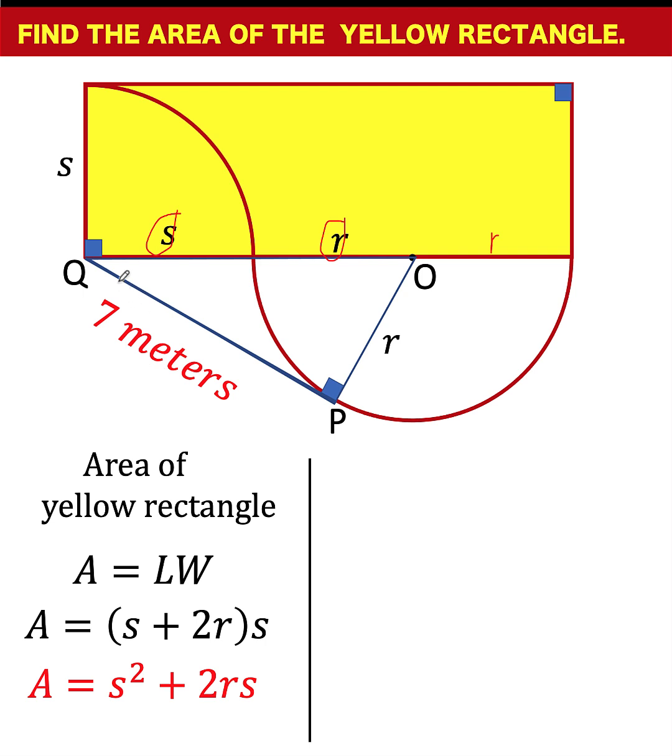Next, consider this right triangle OPQ. From the Pythagorean theorem, the square of the leg QP, with a measure of 7 units, is 7 squared. The square of the other leg OP is r squared. That is equal to the square of the hypotenuse, s plus r.